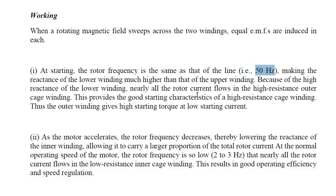Due to the high resistance of the outer cage, high starting torque is developed. Thus, the outer winding gives high starting torque at low starting current. As the motor accelerates, the rotor frequency decreases. The rotor frequency F' is given by S × F, and as speed increases, the value of slip decreases, so the rotor frequency also decreases.